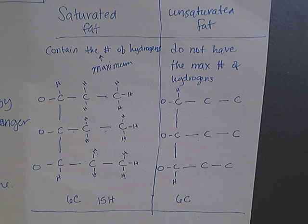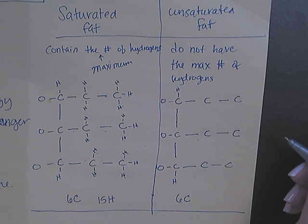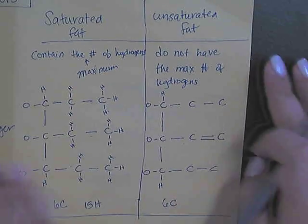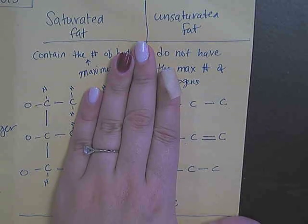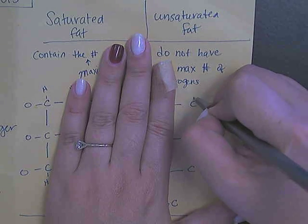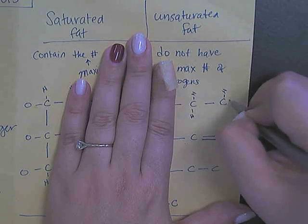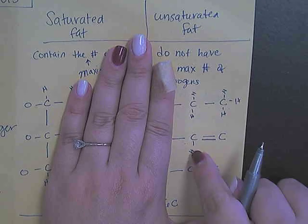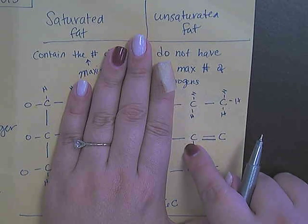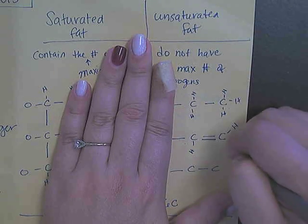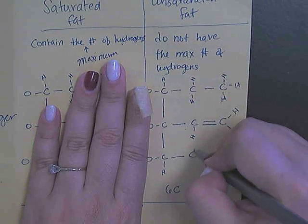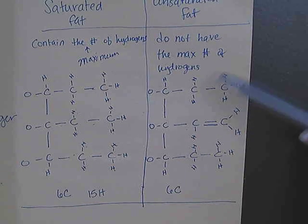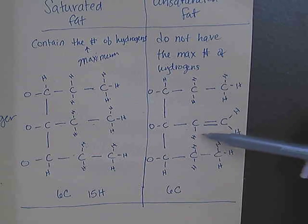For my unsaturated fat, the reason they don't have the maximum number of hydrogens is because of a double bond. I'm going to draw a double bond between two carbons in the chain — this bond can be anywhere. With the same six carbons, when a carbon already has three bonds from the double bond, it can only bind to one more hydrogen, reducing the total hydrogen count.